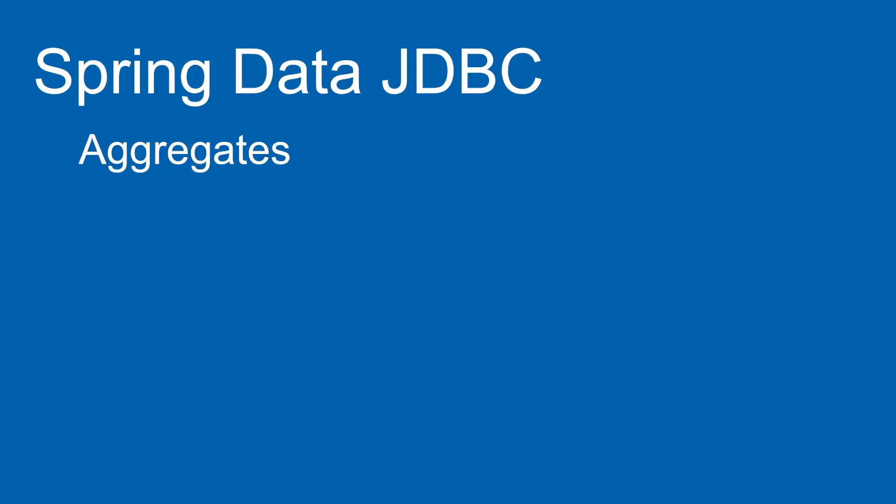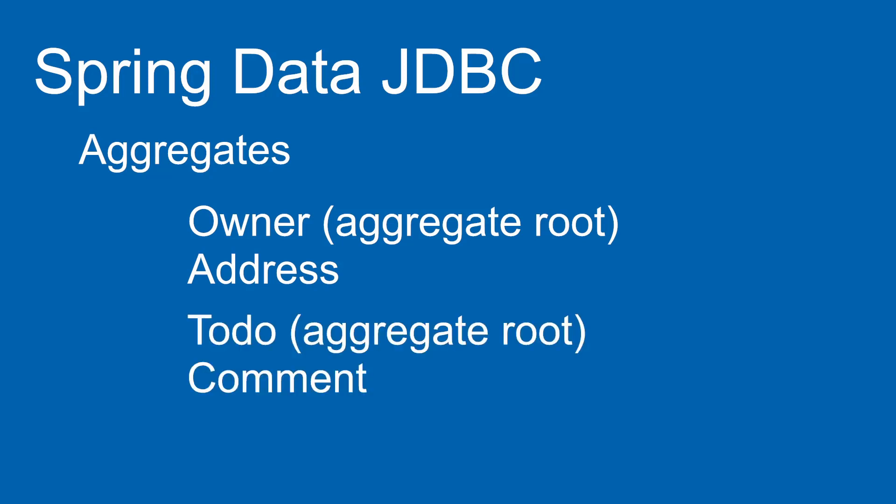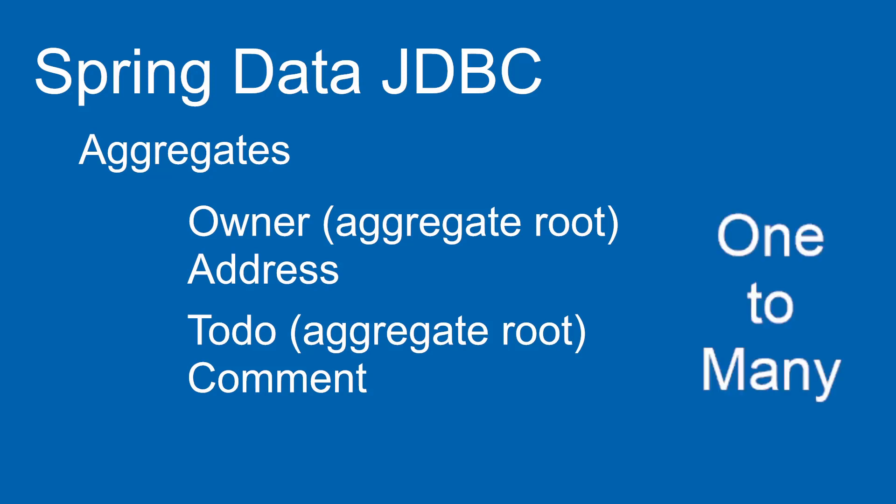First, let me briefly explain what we are going to do in this tutorial. We have four entities in our project: Owner, Address, Todo, and Comment. Owner and Address form the first aggregate, and Owner is the root in this case. Todo and Comment form the second aggregate, and Todo is the root here. In this tutorial we will establish a one-to-many relationship between the aggregate with root Owner and the aggregate with root Todo.